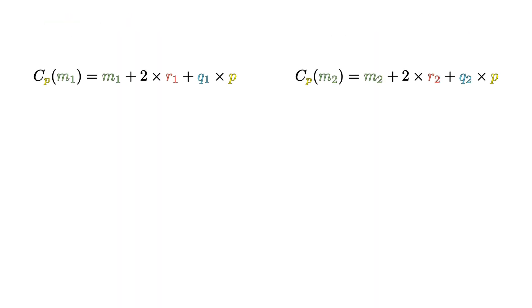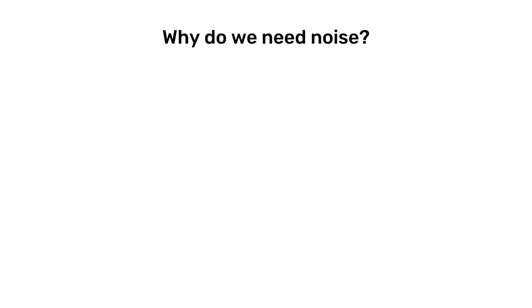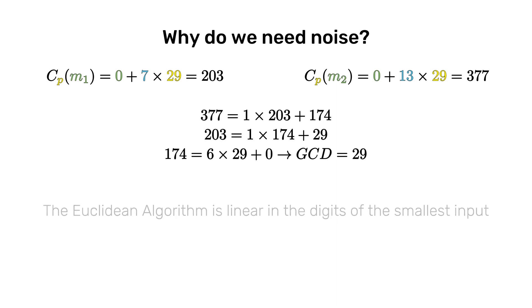Of course, multiplication works in a similar way, but we can see that in that case the noise term grows much faster. Before talking about why a growing noise term is such a crucial issue, let's focus on why we need it in the first place. If we were to remove the noise from our scheme, it would still be capable of performing homomorphic addition and multiplication. However, to break the noiseless scheme, an attacker would just need to get a hold of two messages and proceed by simply calculating the greatest common divisor.